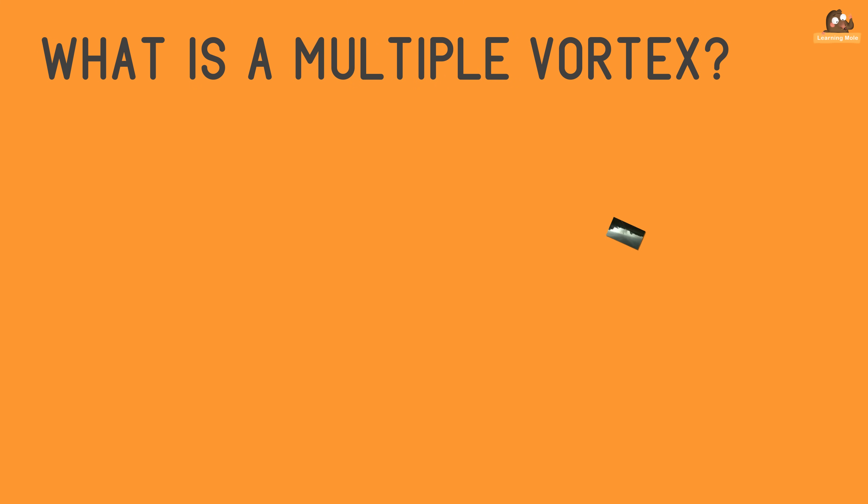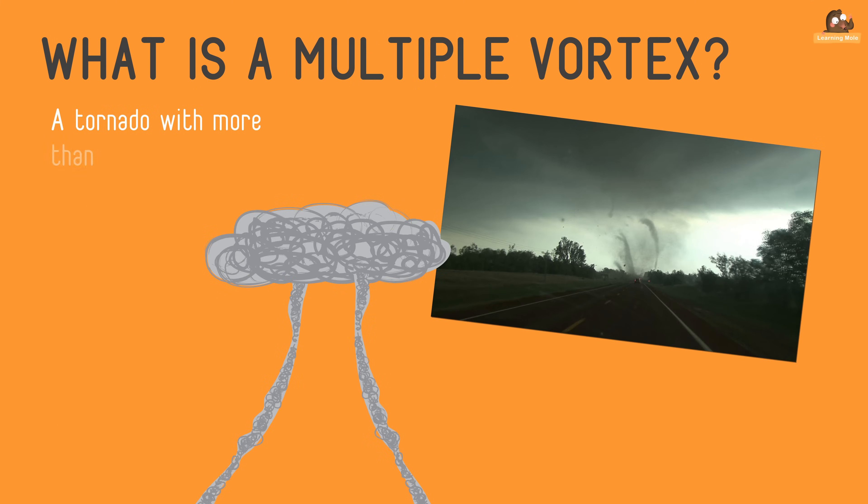What is a multiple vortex? A multiple vortex tornado is a tornado with more than one spinning tube of air.